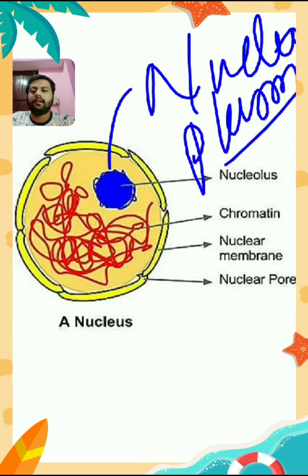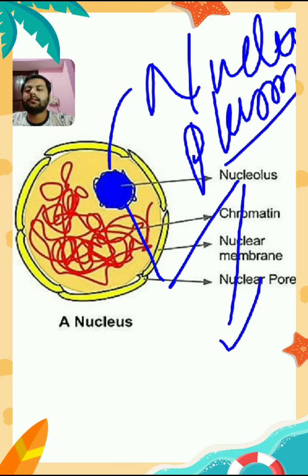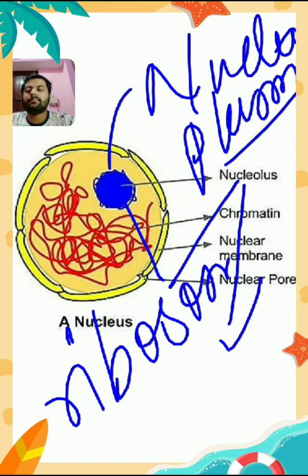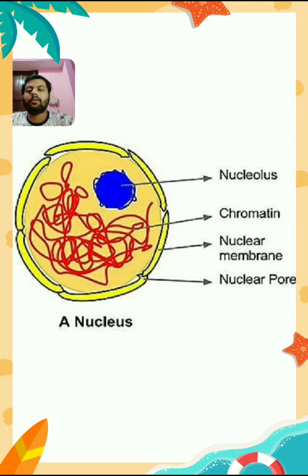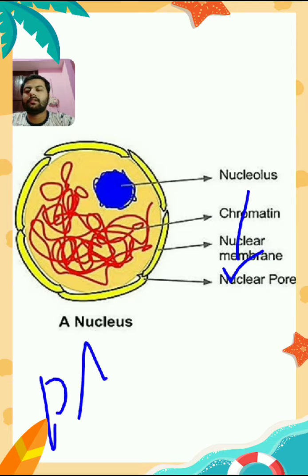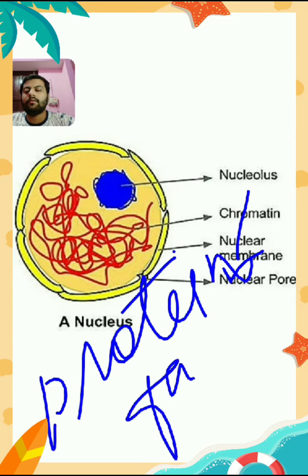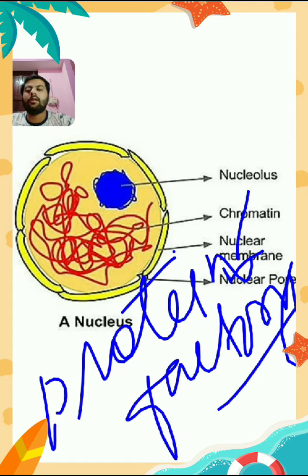Inside nucleoplasm, a dark spherical body is located, known as nucleolus. Nucleolus is responsible for the formation of ribosomes — a cell organelle which is present in both eukaryotic and prokaryotic cells. Because nucleolus helps in the formation of ribosomes, nucleolus is known as the protein factory of the cell.